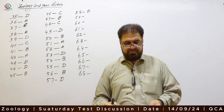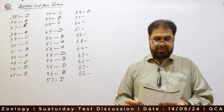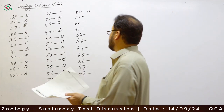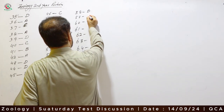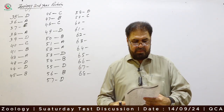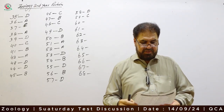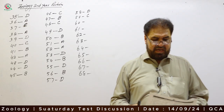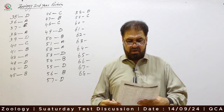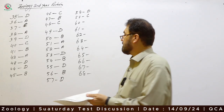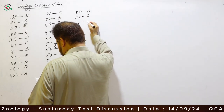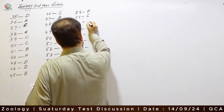Question 59: Suprarenal glands are adrenal glands — Option C. Question 60: The epididymis of men, when uncoiled, may be about 6 meters long, or 20 feet. Option D is correct.